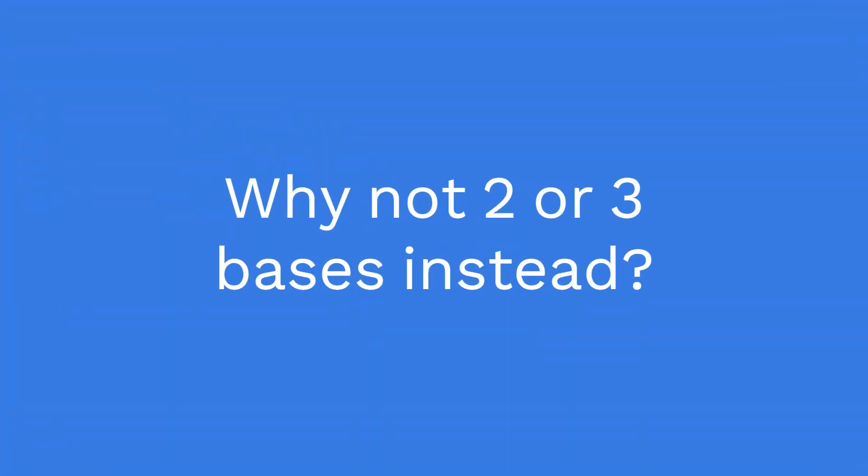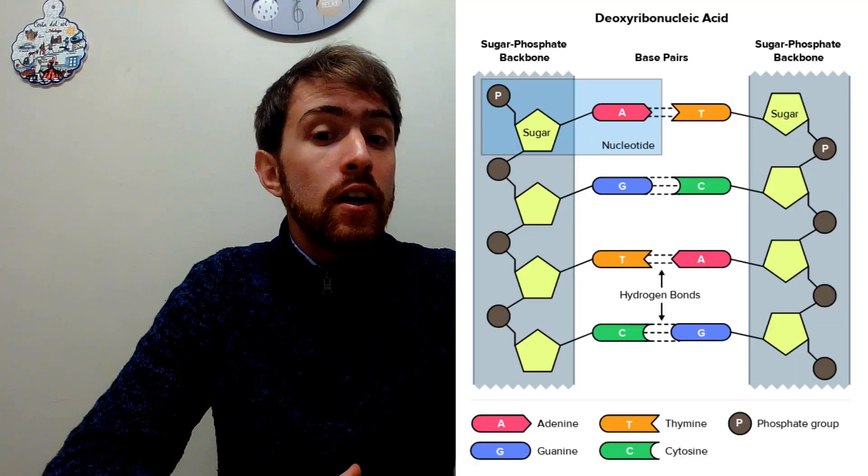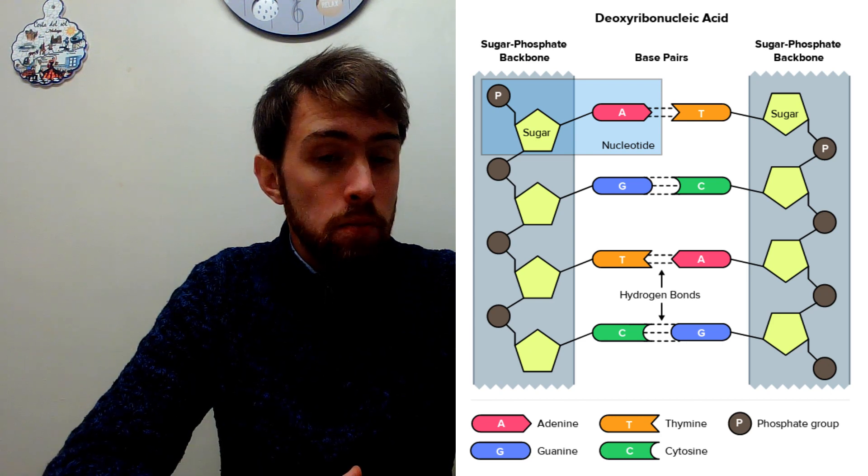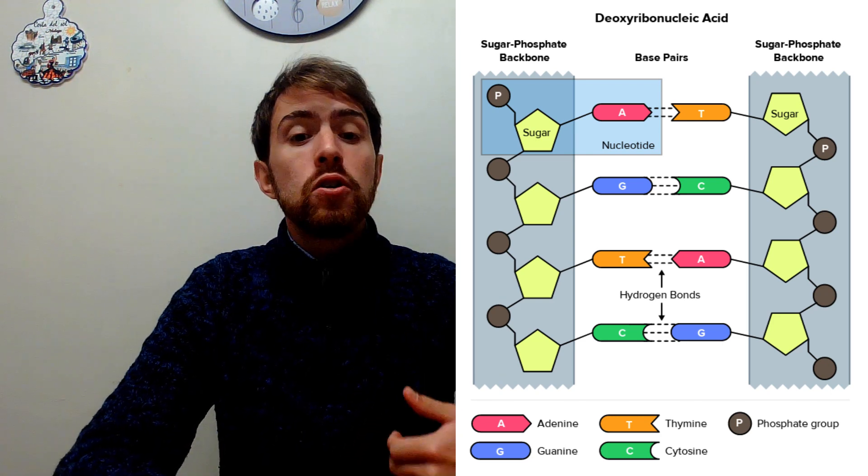Sometimes students get this question with the accompanying questions: why not two? Why not three? Why four instead of two or three? Really, what this question is asking you is to recall the principles of DNA structure and replication. On that basis, it should be very obvious why DNA cannot have three bases. Simply put, there would be no complementary base pair system upon which transcription, DNA replication, and all kinds of nucleic acid hybridisation are dependent upon. So that explains why not three.